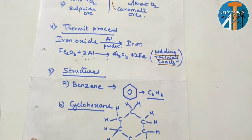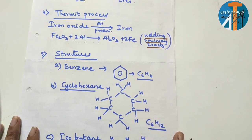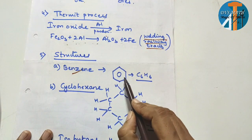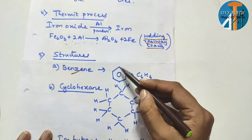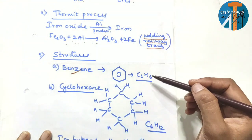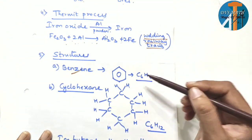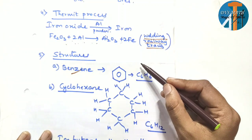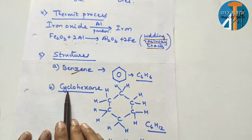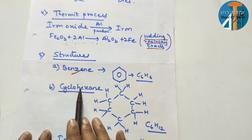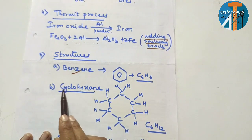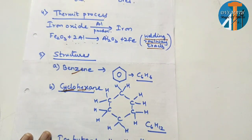Next important thing is structures. You need to practice benzene — structure of benzene is very simple, hexagon shape. Molecular formula is C₆H₆. Next is cyclohexane — cyclo means circle, hexagon means 6 carbon atoms in a circle. The bonds are all single bonds. Cyclohexane has 6 carbon atoms arranged in a circle with single bonds.